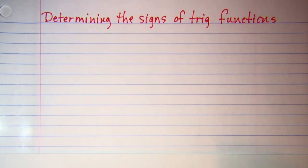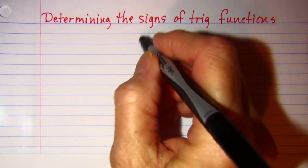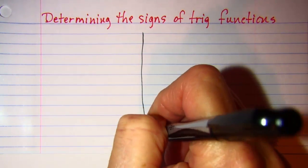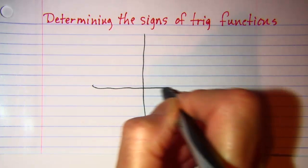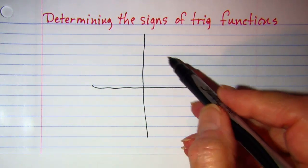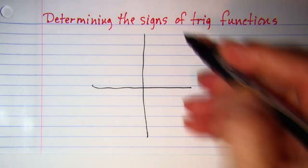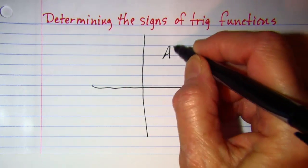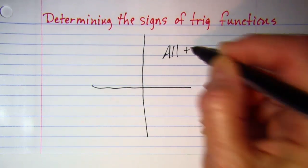Now let me have you recall from a previous video. We looked at the graphs and said that all of the trig functions are positive in quadrant one.